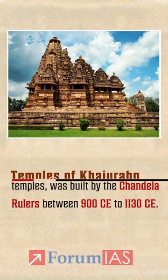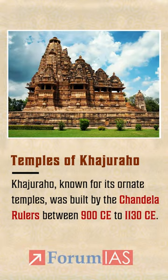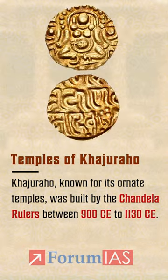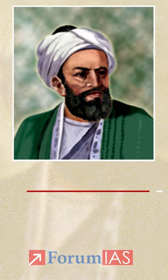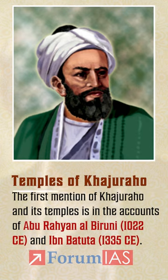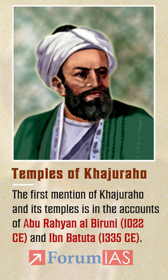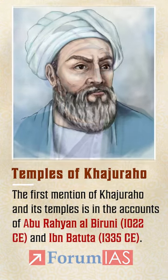Khajuraho, known for its ornate temples, was built by Chandela rulers between 900 CE to 1130 CE. The first mention of Khajuraho and its temples is in accounts of Abu Rehan al-Biruni and Ibn Batuta.